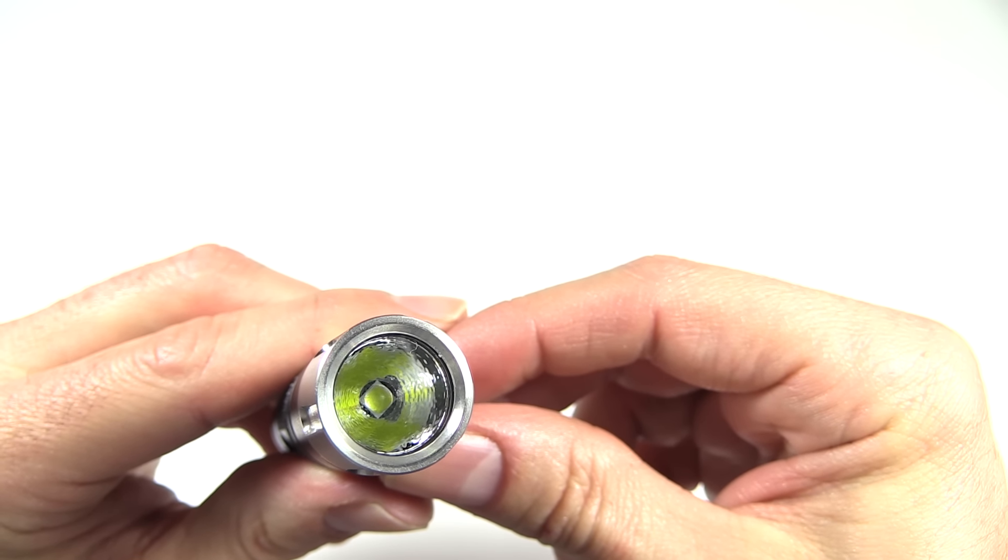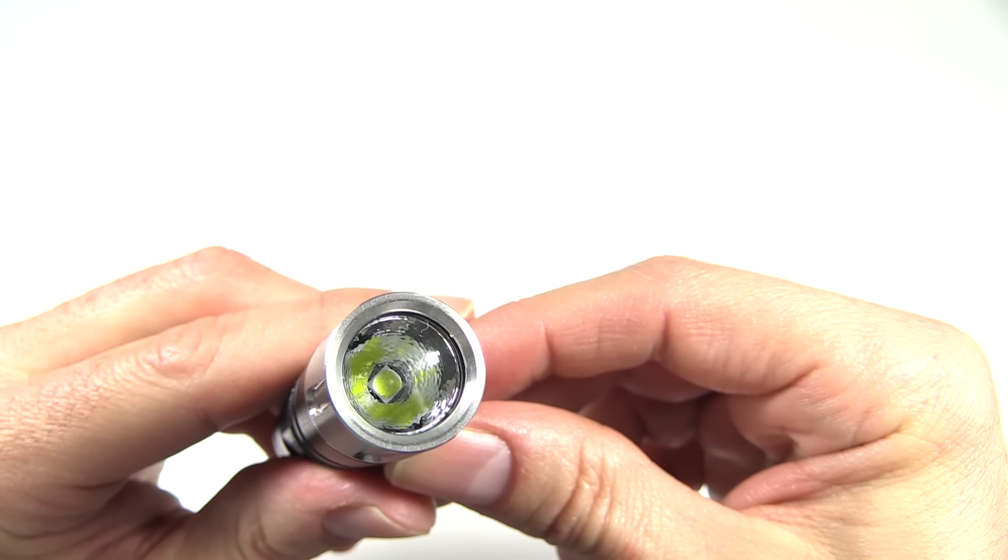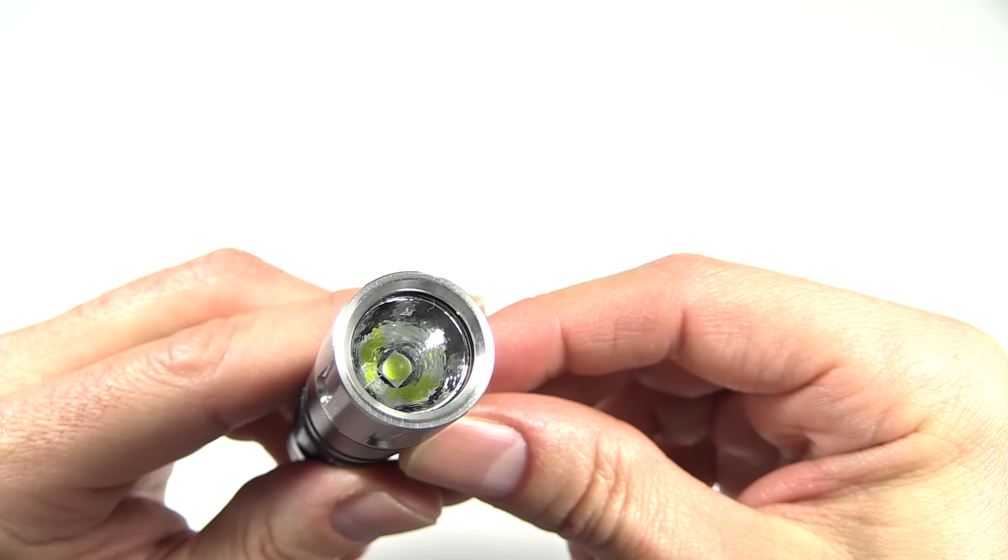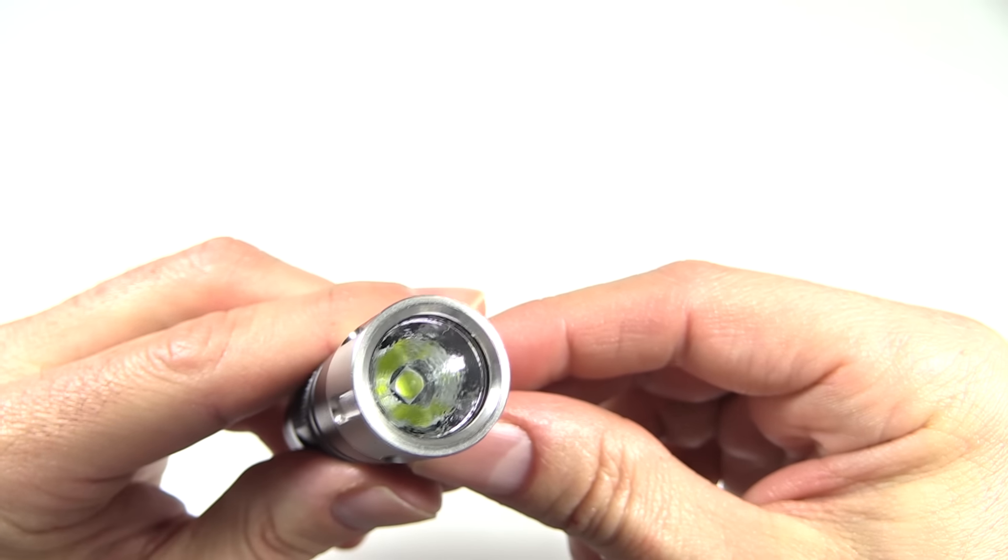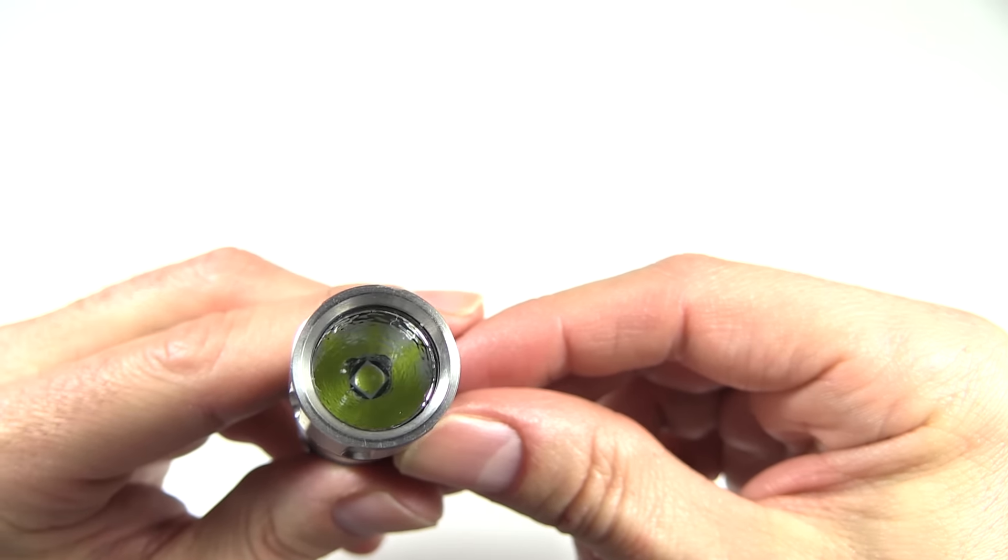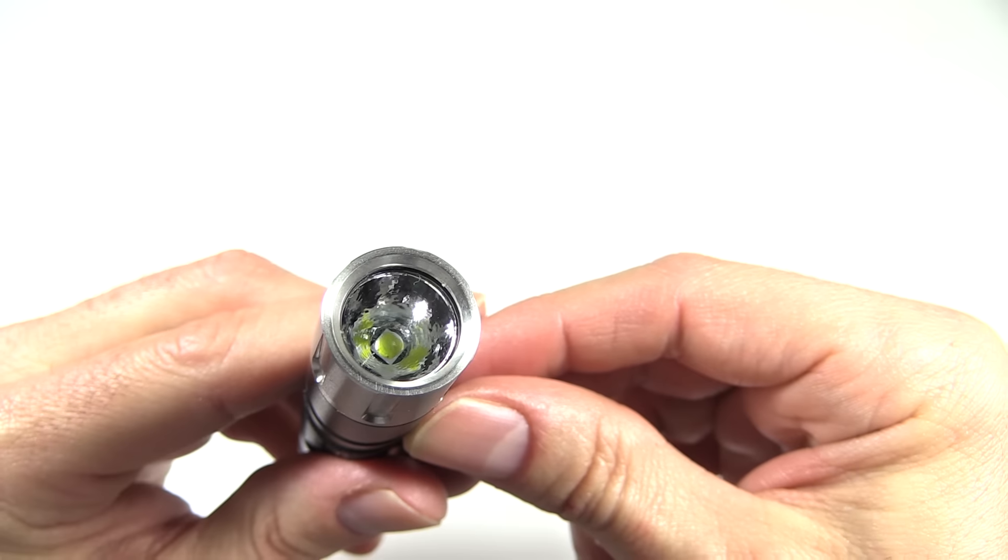And it's going to increase the output from 169 lumens up to 252 lumens, still with similar runtimes. And you can see in there that orange peel reflector behind the anti-reflective coated glass lens.